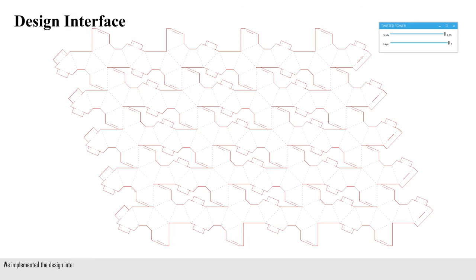We implemented the design interface with Grasshopper to adjust parameters, such as fabrication layers and scales. These parameters can adjust the size and height of origami structure to align with user design intention.